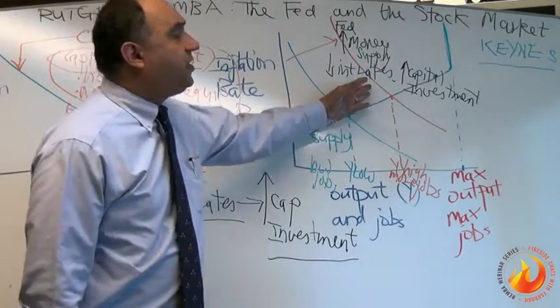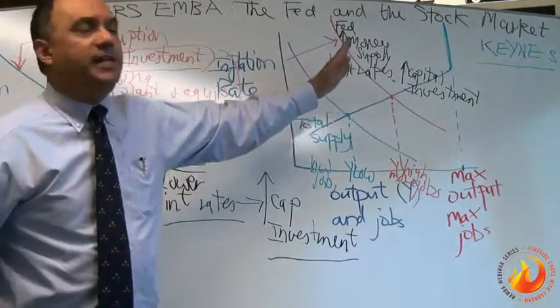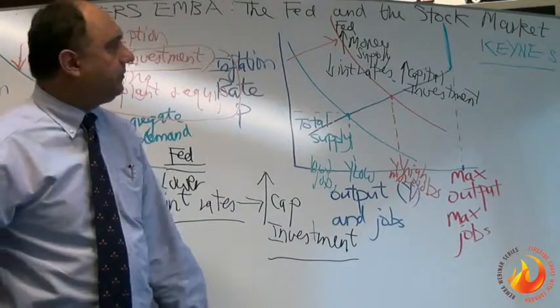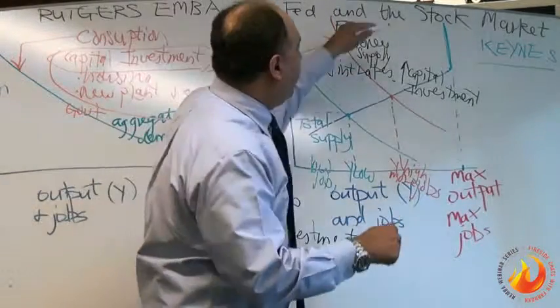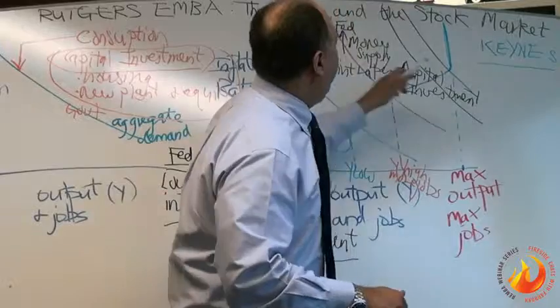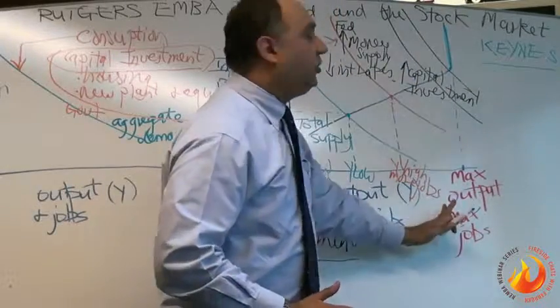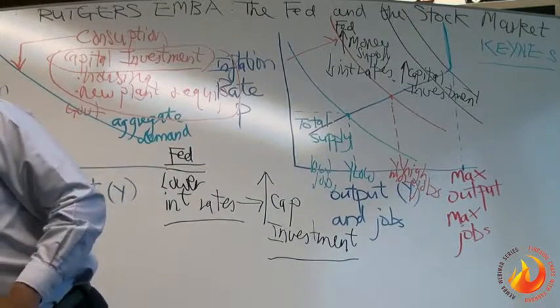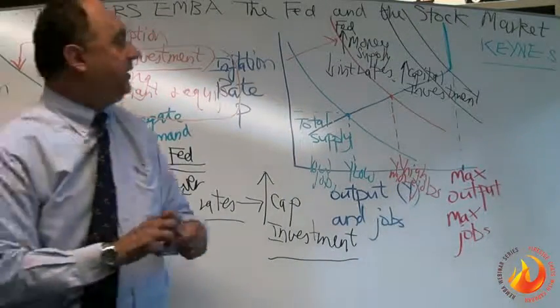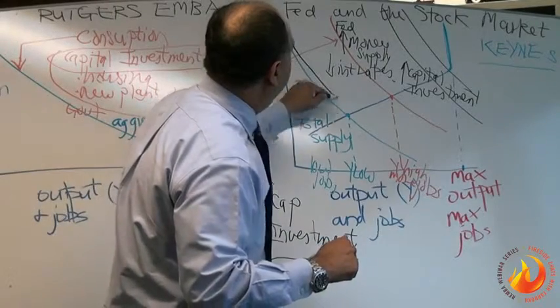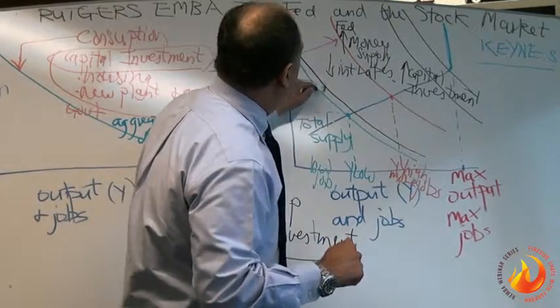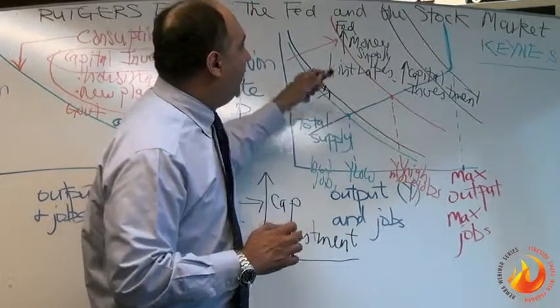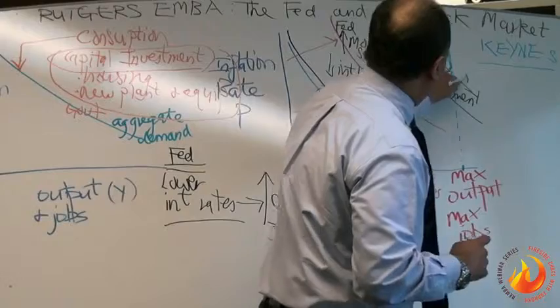Now the question is, this has been done tremendously. $85 billion a month of new money has been created over the last few years. Given that, we should be way the heck out here. We should have pumped the economy all the way to maximum output. How come, in reality, in the summer of 2013, we're just barely here? In reality, we're just finally getting some traction. But given the amount of money we printed, we should have been here.